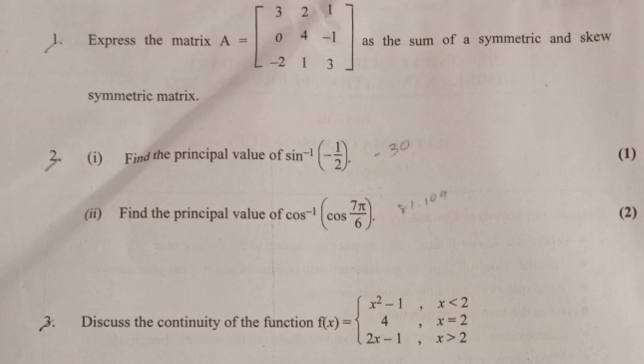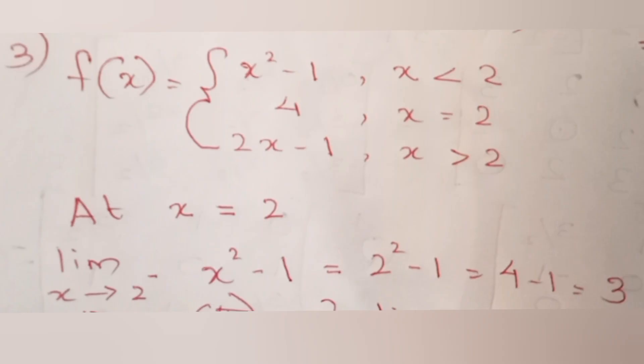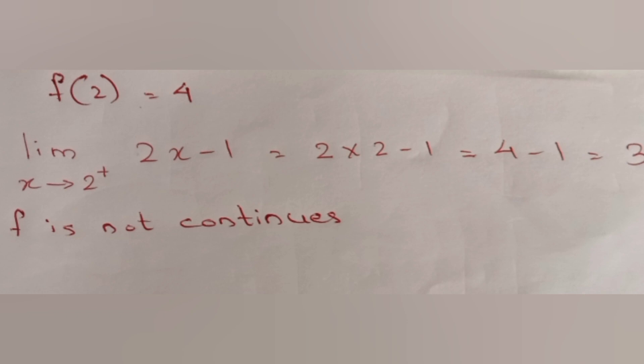Discuss the continuity of f(x) = x² - 1 when x < 2, 4 when x = 2, and 2x - 1 when x > 2. Answer: Limit as x tends to 2 minus of x² - 1 equals 3. f(2) equals 4. Limit as x tends to 2 plus of 2x - 1 equals 3. Since the left-hand limit ≠ f(2), f is not continuous.